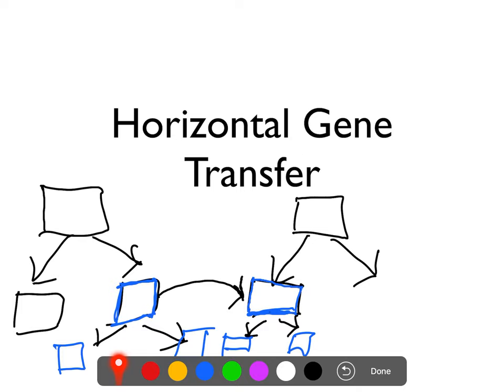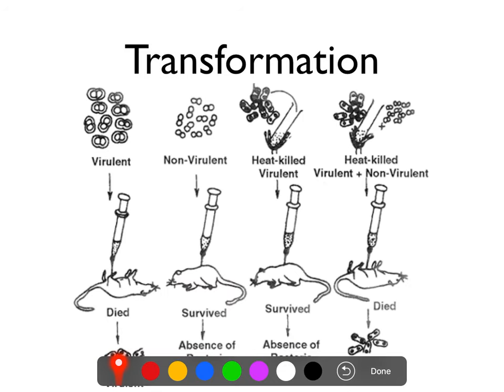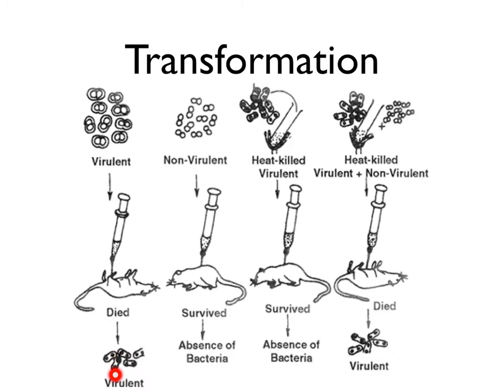There are three main mechanisms of horizontal gene transfer. First is transformation. This is a classic experiment — actually one of the first experiments that showed that DNA was the genetic material. So remember there are two strains of Strep pneumoniae. One strain is called the smooth strain. If you take the smooth strain and inject it into mice, the mice die, and if you culture their blood, you find smooth strain bacteria in it.